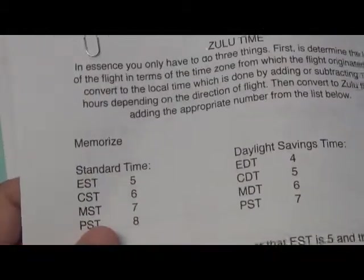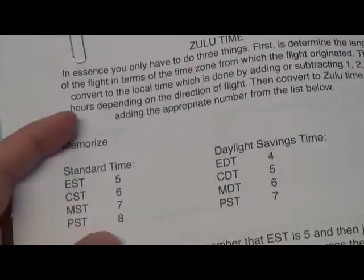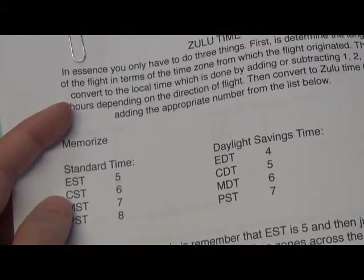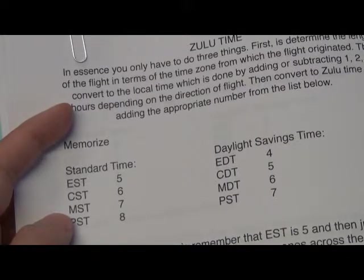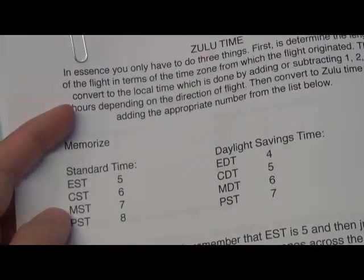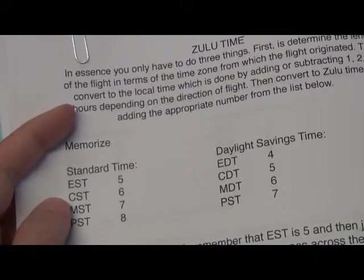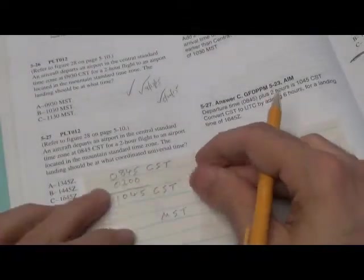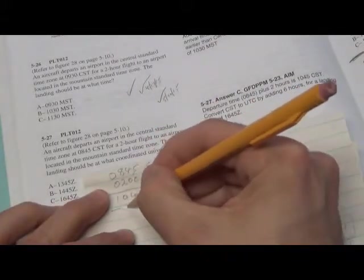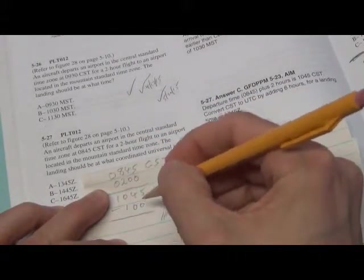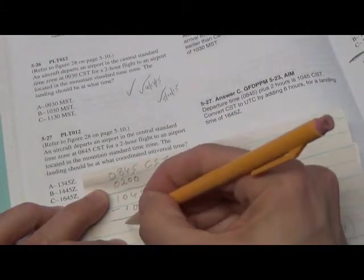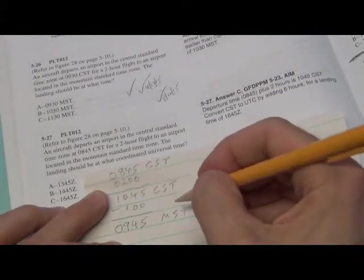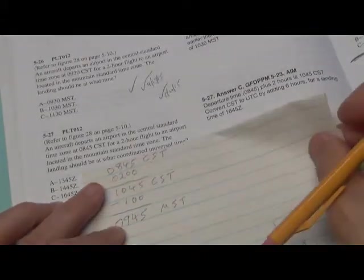We get our chart here, we ignore the numbers to the right, we're only looking to the left. We started in the Central Time Zone, we landed in the Mountain Time Zone, so they're one hour apart. Since Mountain is west of Central, you minus the hour, so it's minus one hour. So you go back to here, you write minus one hour, and your answer is 945, really 0945, Mountain Standard Time.